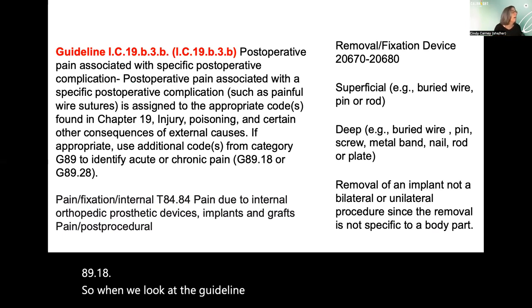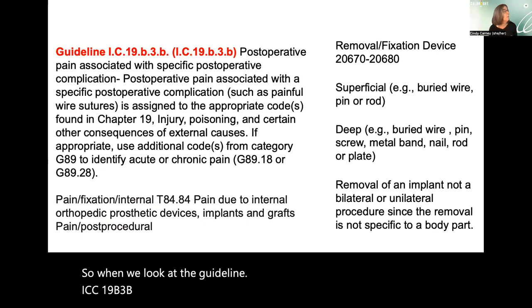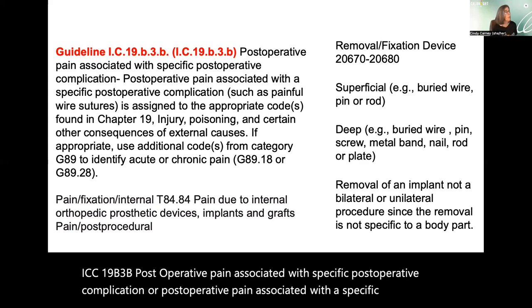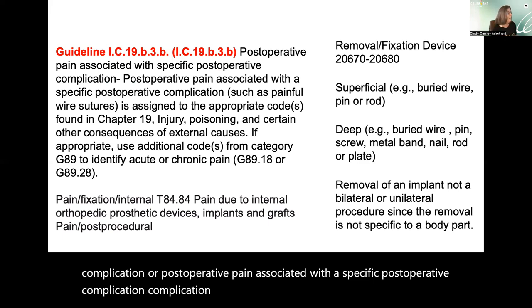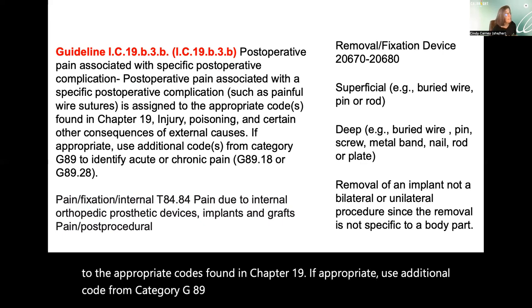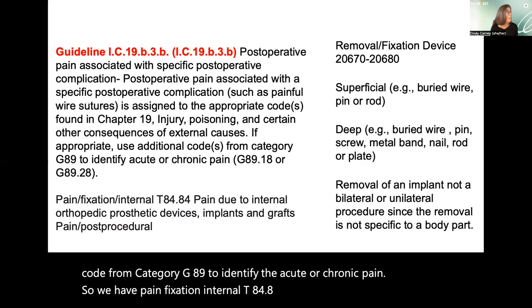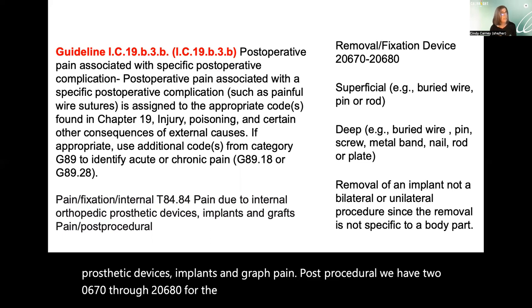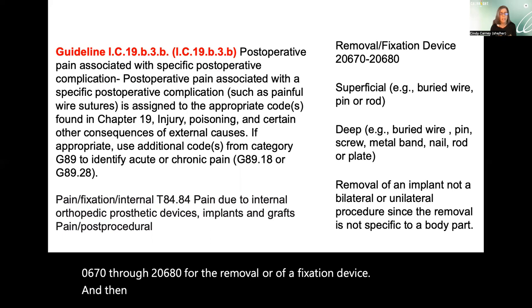Per ICD-10-CM guideline IC19B3B, post-operative pain associated with a specific post-operative complication — such as a painful wire suture — is assigned to the appropriate codes found in Chapter 19. If appropriate, use an additional code from Category G89 to identify acute or chronic pain. We have T84.84 for pain due to internal orthopedic prosthetic devices, implants, and grafts. CPT codes 20670 through 20680 cover removal of a fixation device.